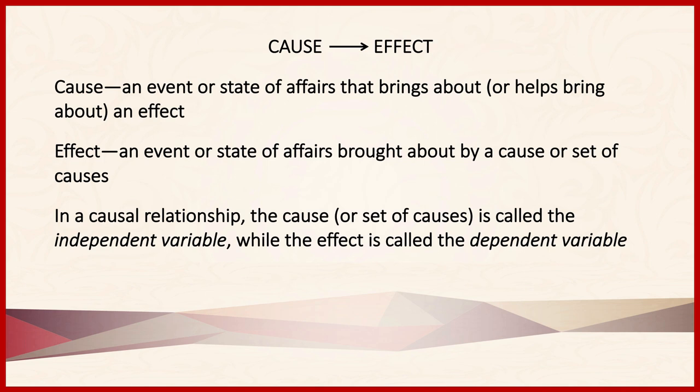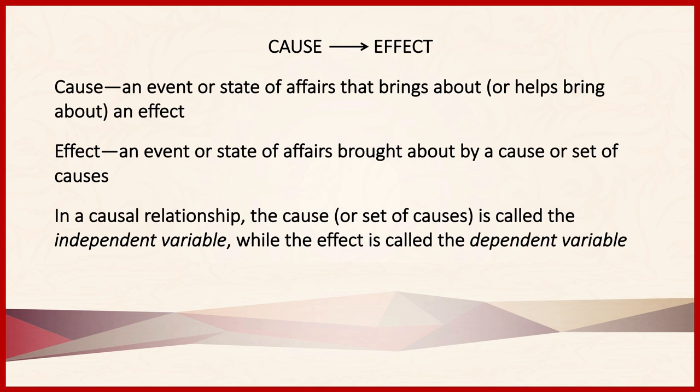Very often, cause and effect relationships are also understood in terms of necessary and sufficient conditions. If a cause is a necessary condition for an effect, then the effect cannot occur without the cause. Thus, if the effect occurs, then the cause must be there. Oxygen, for example, is a necessary condition for fire. This means that you cannot have fire without oxygen.